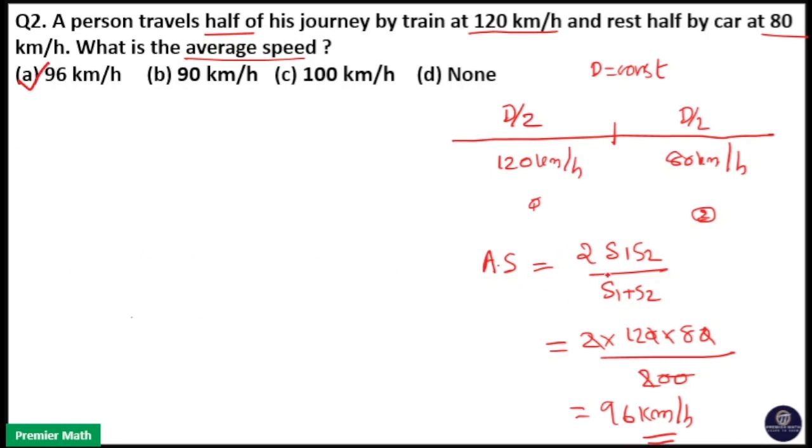Here if you don't know this formula average speed, that is 2 s1 s2 divided by s1 plus s2, you can use another method as well. Here distance is constant. So first half train traveled at 120 km per hour and second half at 80 km per hour.